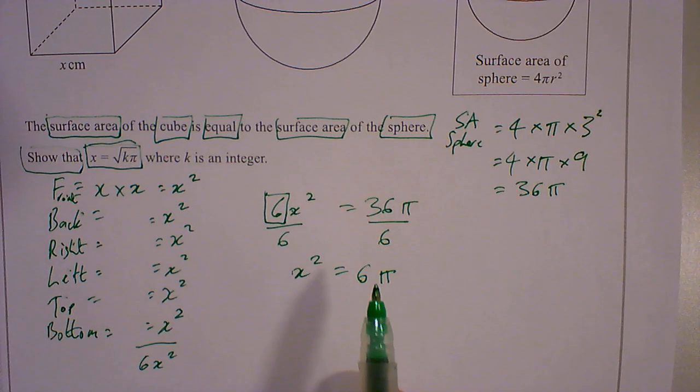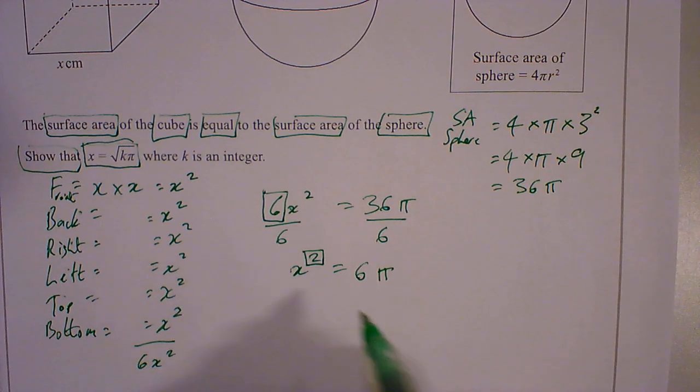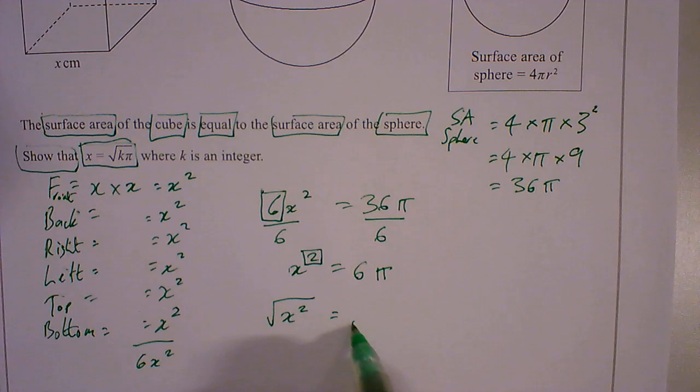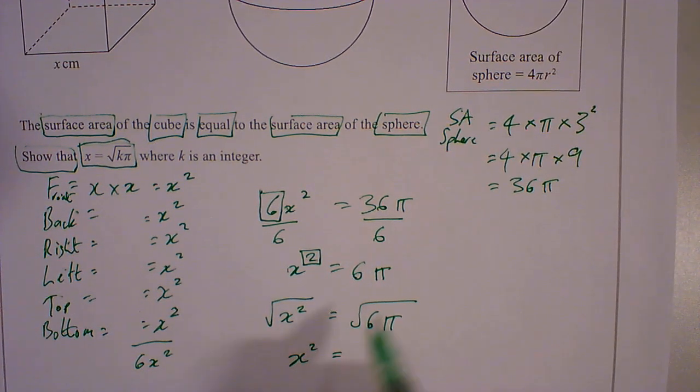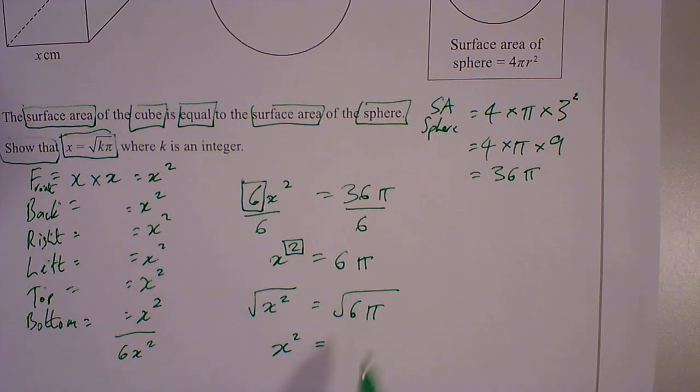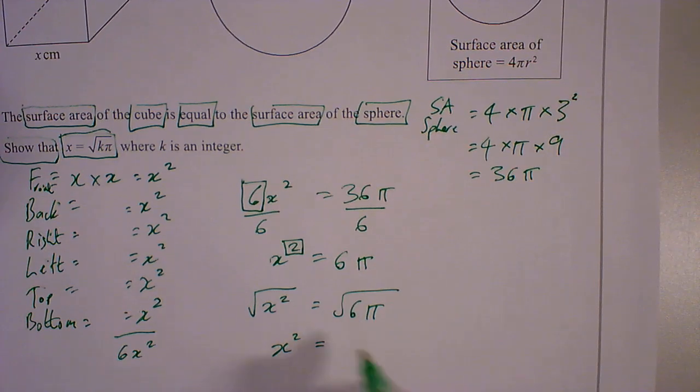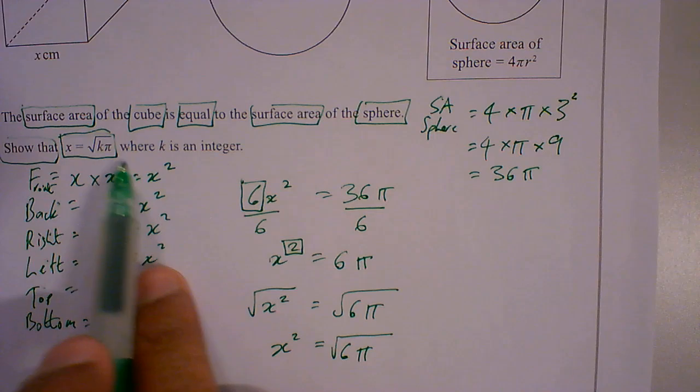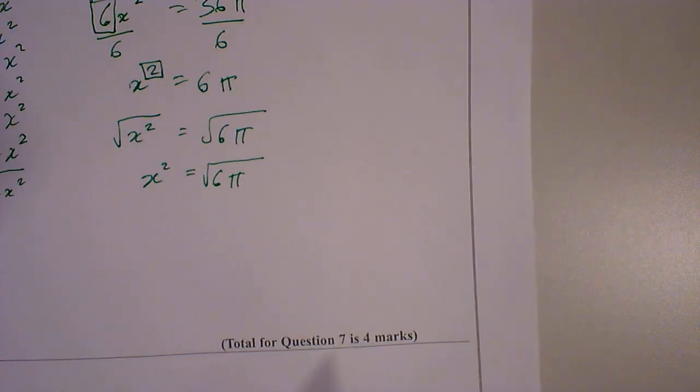The next thing I need to do, the last thing I need to do, is what's the inverse opposite of squaring, which is square rooting. So I need to square root x², square root this. So this now becomes x, and this is in the format of that, square root kπ, so it stays as it is 6π. k is an integer, so 6 is my integer. And this is worth four marks.